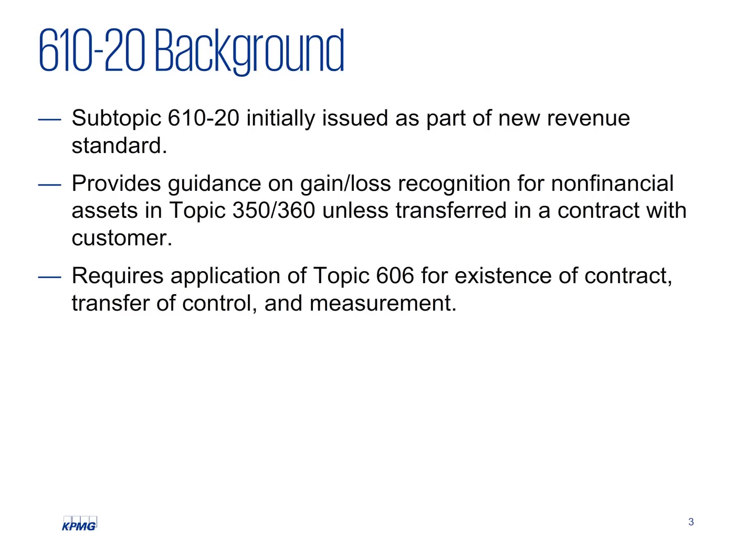The amendments in Accounting Standards Update 2014-09, Revenue from Contracts with Customers, largely superseded Subtopic 360-20, which is the guidance on real estate sales including partial sales, and created Subtopic 610-20 to require that an entity generally apply the recognition and measurement principles in Topic 606 to sales of non-financial assets and in-substance non-financial assets to non-customers. Stakeholders expressed concern that Subtopic 610-20 as issued does not adequately define in-substance non-financial assets and should be clarified to address how to account for partial sales and the corresponding accounting for retained interest. These two items are the focus of the FASB's project.